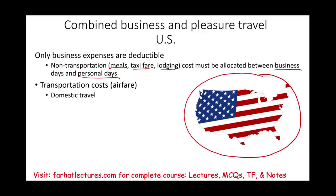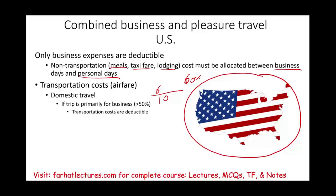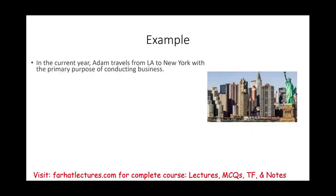For domestic travel — within the U.S. — there are different rules than for international travel. If the trip is primarily for business, transportation such as airfare is fully deductible. To determine whether a trip is 'primarily business,' you look at the total number of days. If more than 50% of days are business days — for example, four business days out of five total — that qualifies. If the trip is not primarily business, you get zero transportation deduction.